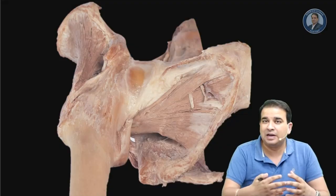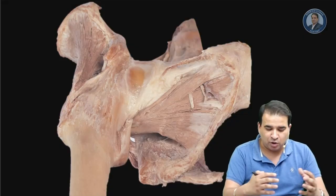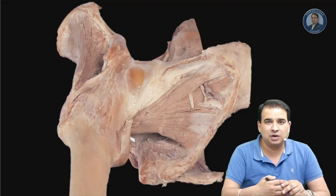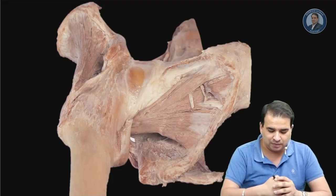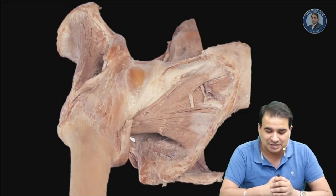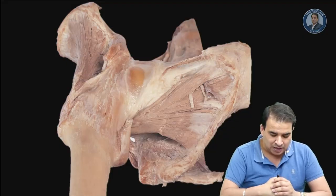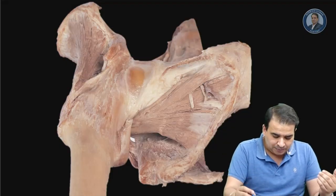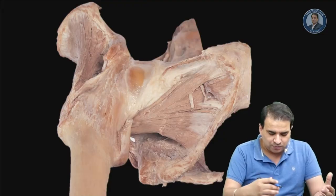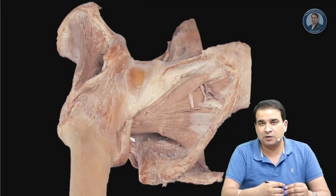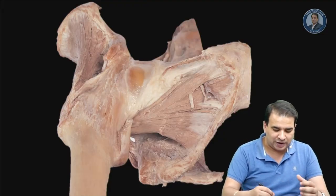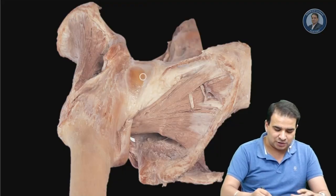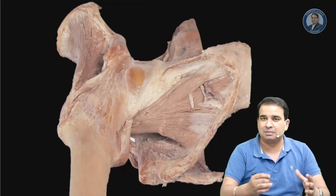Before switching to the ligaments, we first need to identify some important landmarks, hints, and clues which will help in understanding the attachment of those ligaments. This is the anterior view of the hip joint. I'll tell you how to differentiate between the anterior and posterior view of the hip joint, as it is surrounded by some ligaments and muscles.